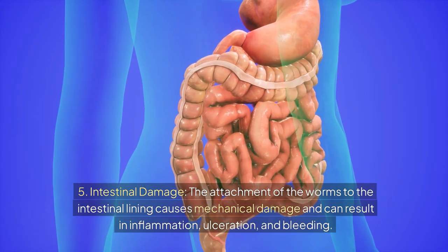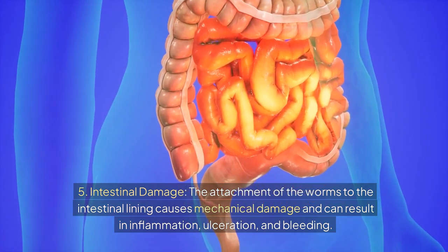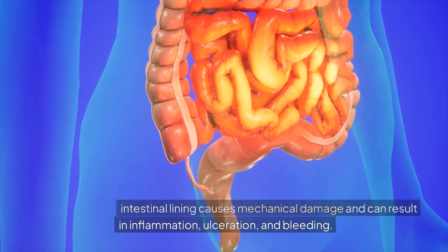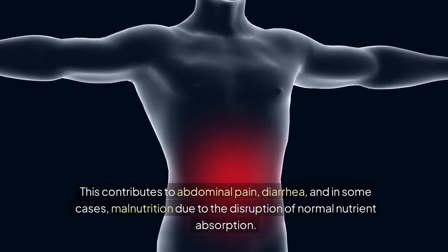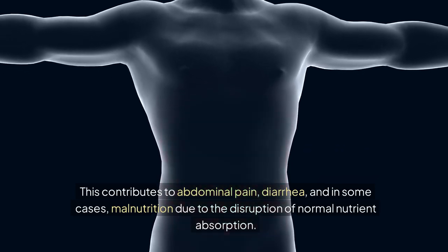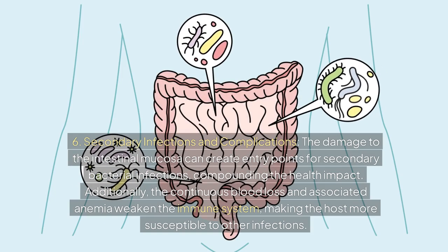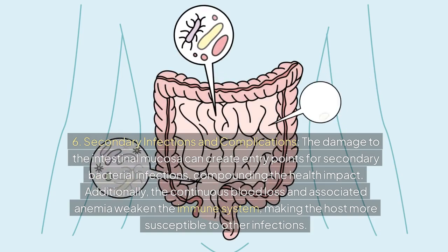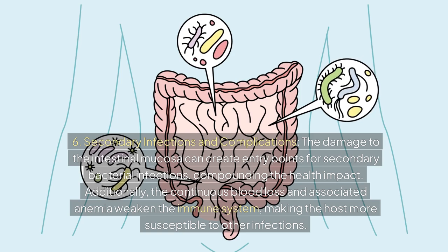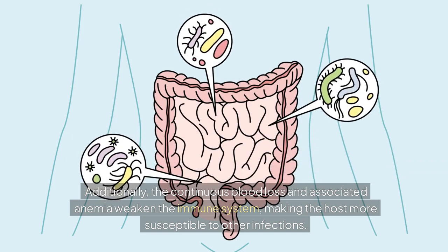Step 5 — Intestinal damage: The attachment of the worms to the intestinal lining causes mechanical damage, resulting in inflammation, ulceration, and bleeding. This contributes to abdominal pain, diarrhea, and in some cases malnutrition due to disruption of normal nutrient absorption. Step 6 — Secondary infections and complications: The damage to the intestinal mucosa creates entry points for secondary bacterial infections, compounding the health impact. Additionally, continuous blood loss and associated anemia weaken the immune system, making the host more susceptible to other infections.